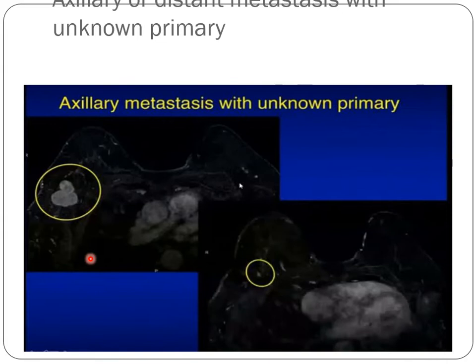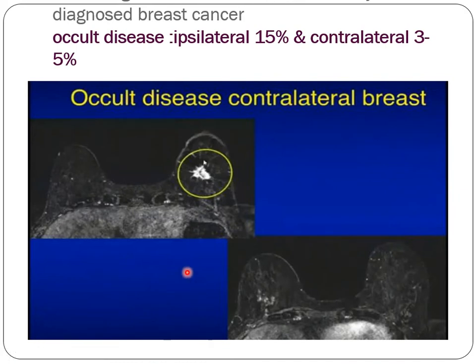Another indication is axillary metastasis with unknown primary. For example, if a patient has axillary metastasis but no identified primary lesion, MRI can reveal an occult lesion in the ipsilateral breast that is too small to be seen by other modalities. Additionally, screening the contralateral breast is important in newly diagnosed breast cancer to exclude occult lesions not visible by other modalities.